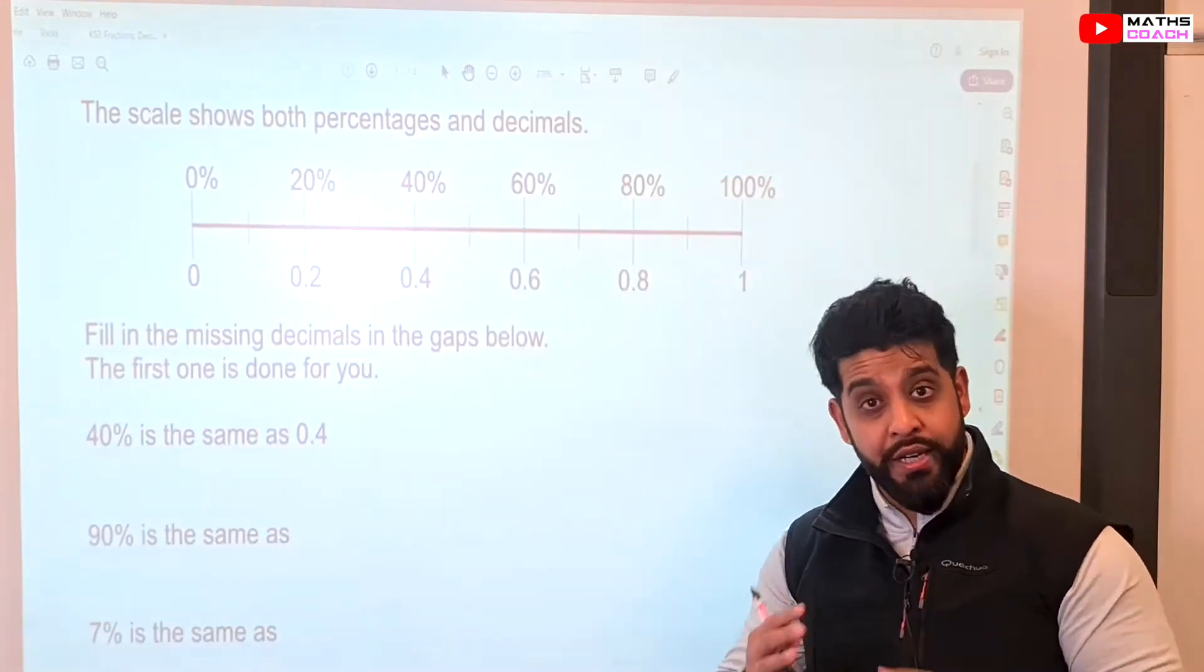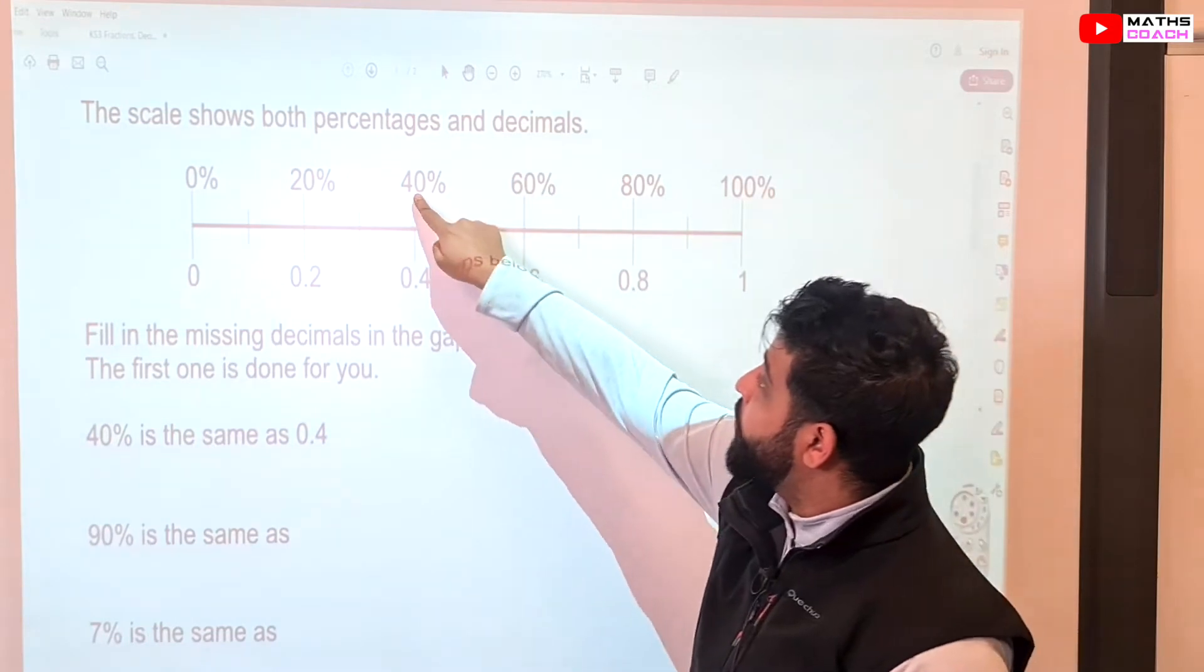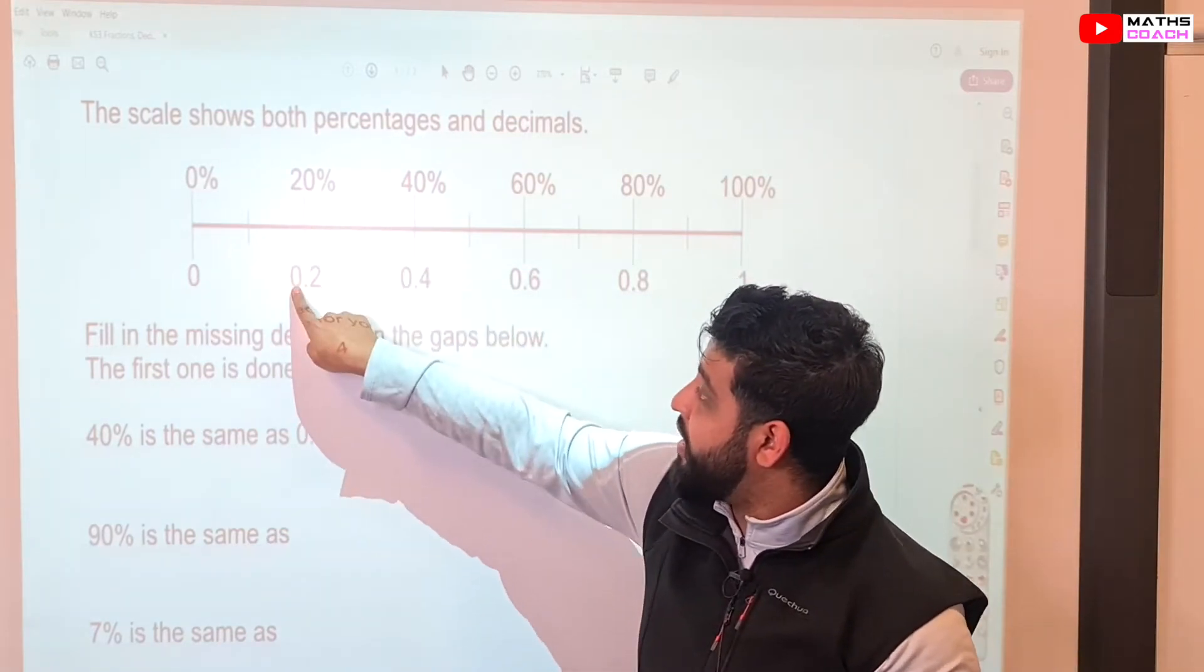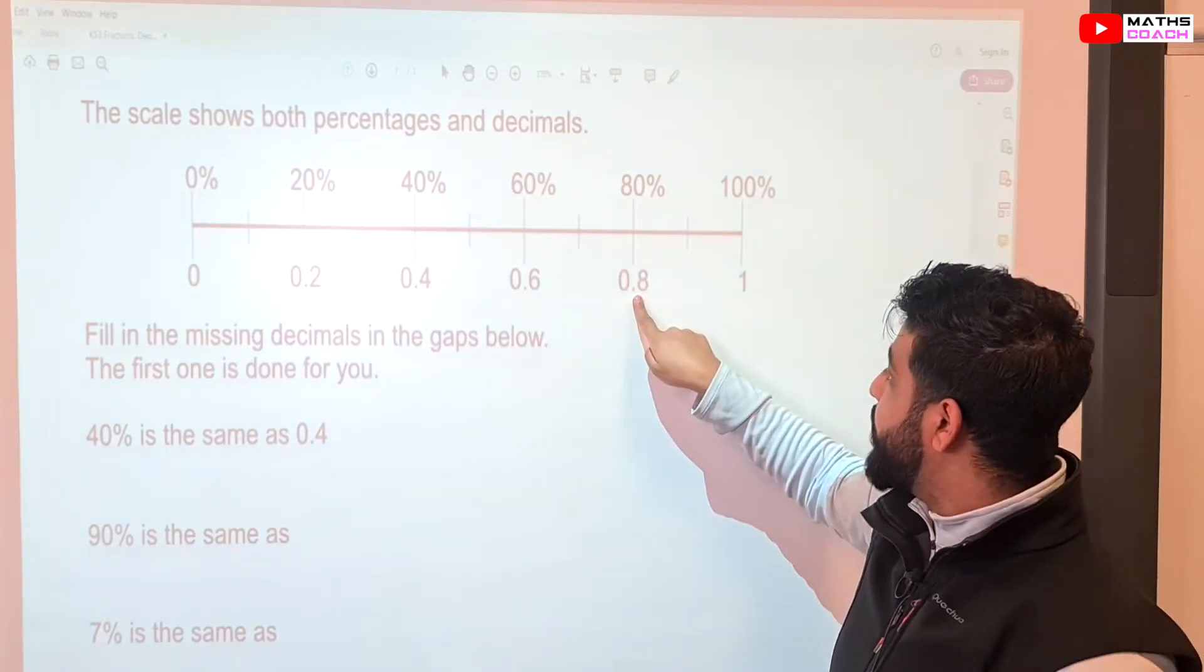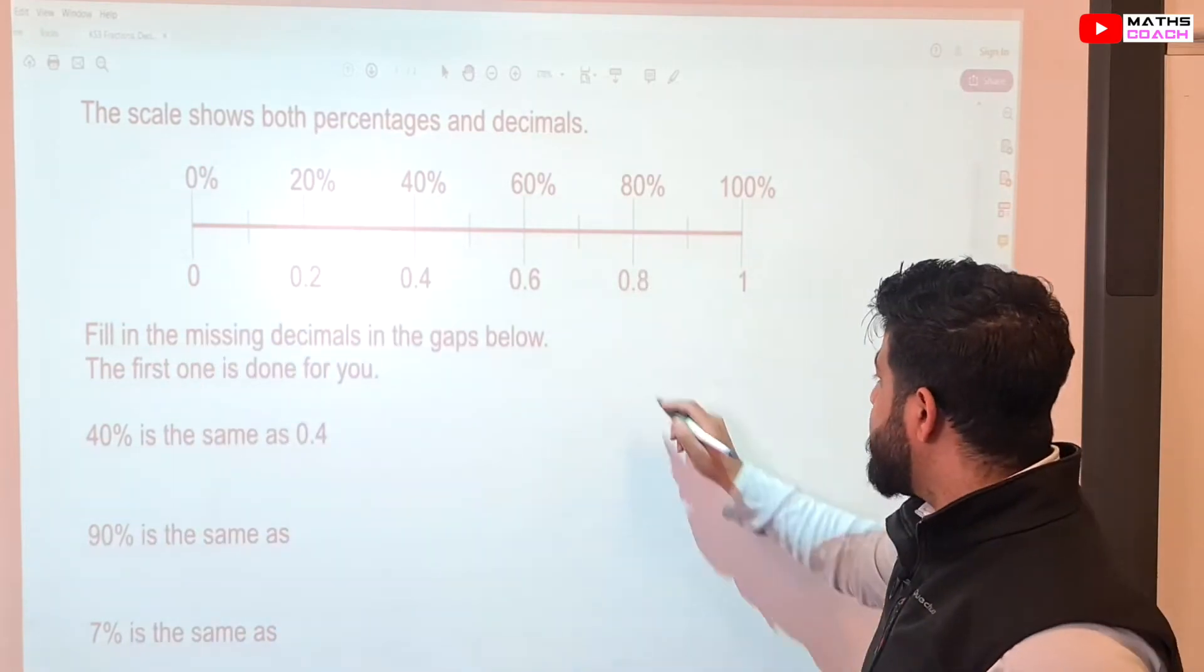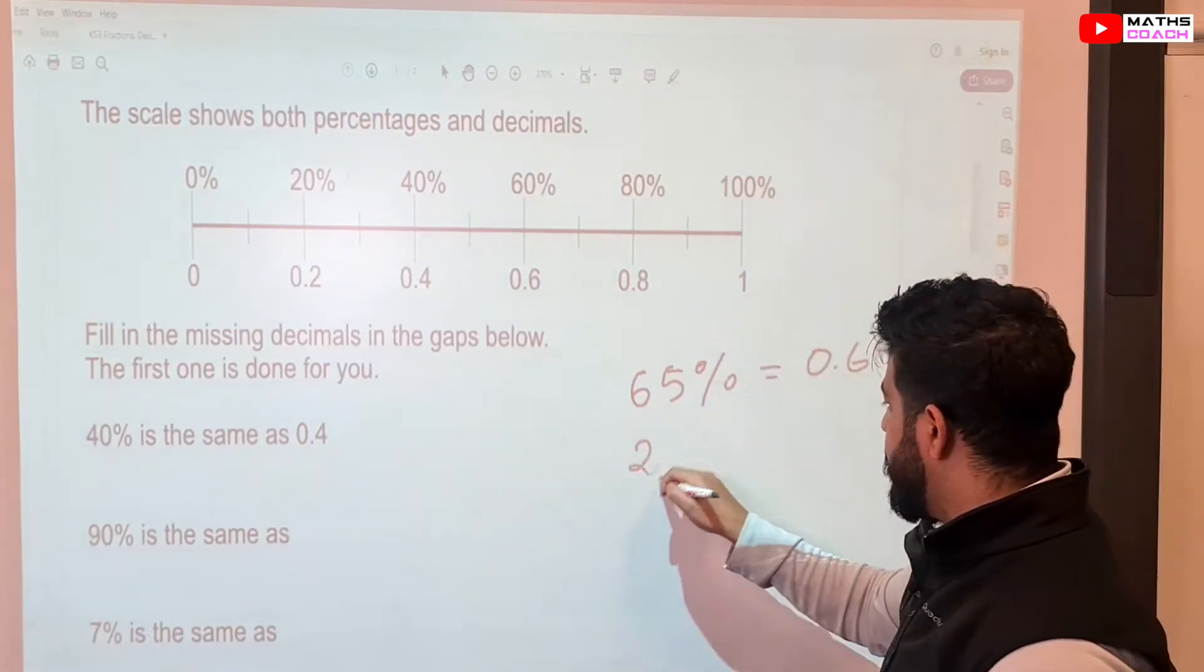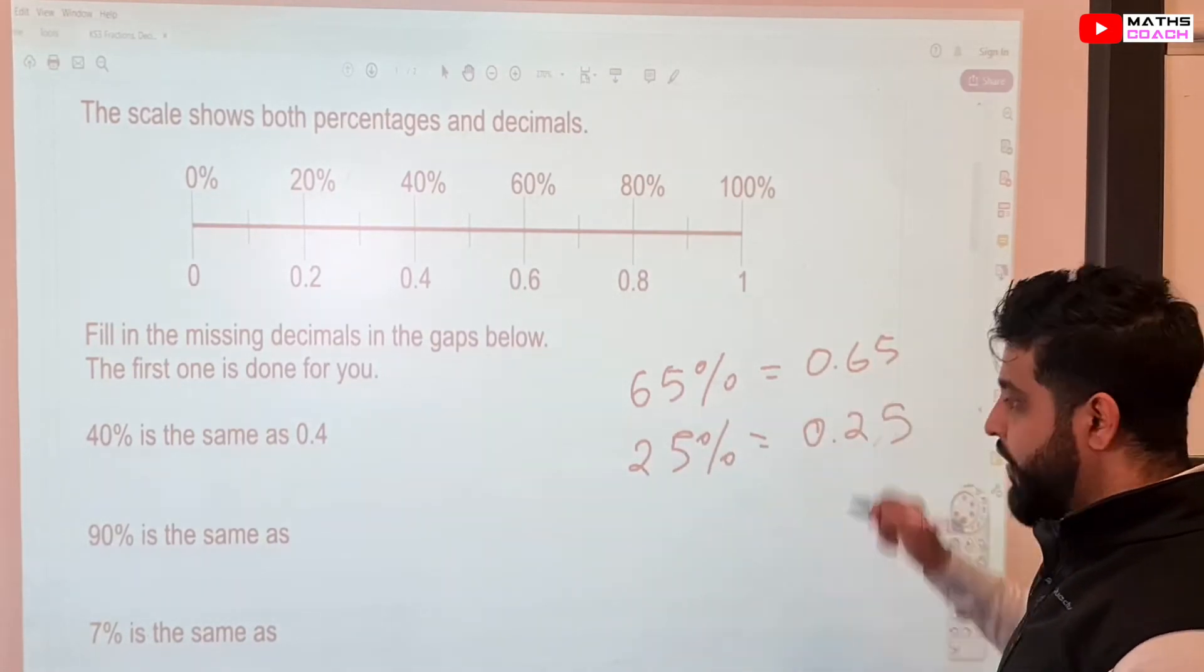So, in the previous example, I did that decimal one for you. And this is how easy it is to find the decimal form from percentages. So, for example, 40% is the equivalent of 0.4. We divide by 100, we get 0.4. 20% divided by 100, 0.2. 60% is 0.6. 80% is 0.8. 100% is always out of 1 and 0% is always 0. I'll give you a few more. So, for example, what about 65%? What's 65% as a decimal? Divide by 100, 0.65. So, what about 25% as a decimal? Divide by 100, 0.25.